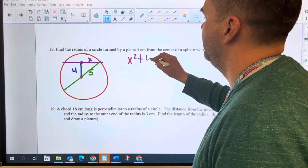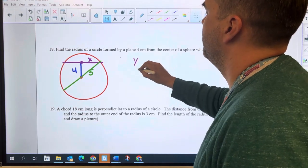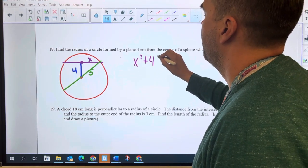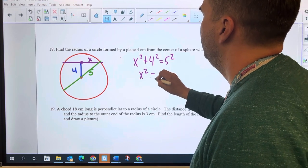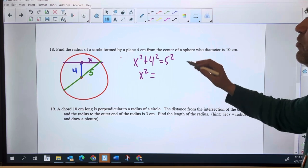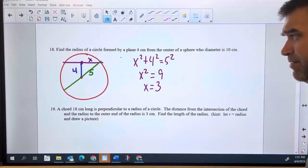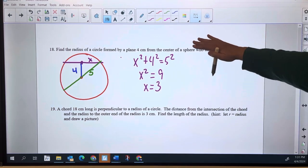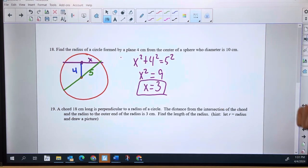X squared plus 4 squared equals 5 squared. 25 minus 16 is 9, so X equals 3. Now again, it's asking for the radius so all I need is that three. If it asks for the diameter I would need to double that three. Number 19.